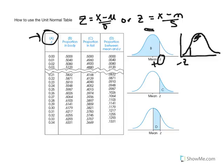Now remember that a normal distribution is symmetrical, so it's a mirrored image on one side as the other. So we could also consider the body or proportion above a negative z-score — all of that area would be greater than 0.5 or 50%. This pertains to the area above a negative z-score, or an x-value below the mean. The next column, column C, is referred to as proportion in the tail.